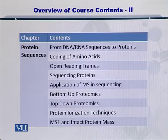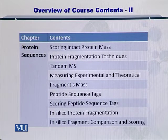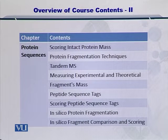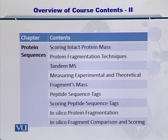Then we will begin with data processing. We'll start with MS1 and estimation of the intact protein mass. We will see how to score this intact protein mass and then protein fragmentation towards tandem MS. We'll calculate the experimental and theoretical molecular weight of proteins and peptides, then calculate the peptide sequence tags, score them, and perform in silico protein fragmentation and scoring as well as comparison.